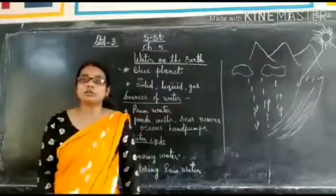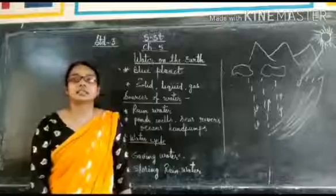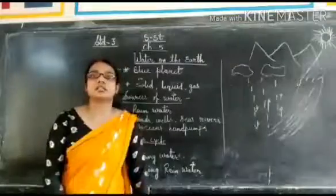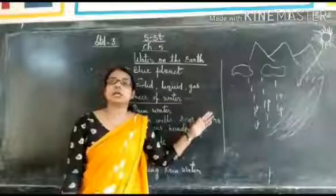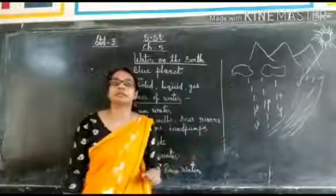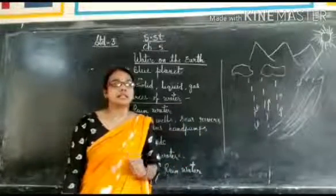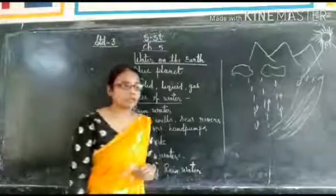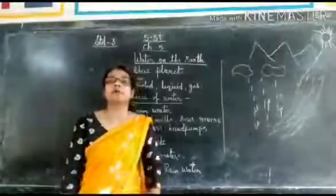When the clouds cool down and condense, the water returns to the ground. This continuous process is called water cycle.